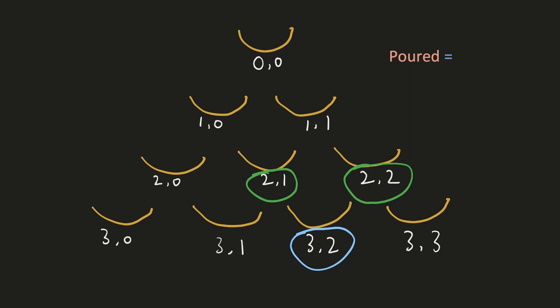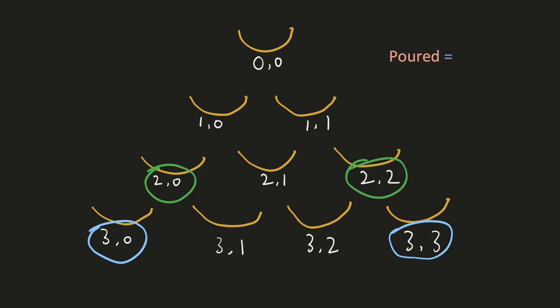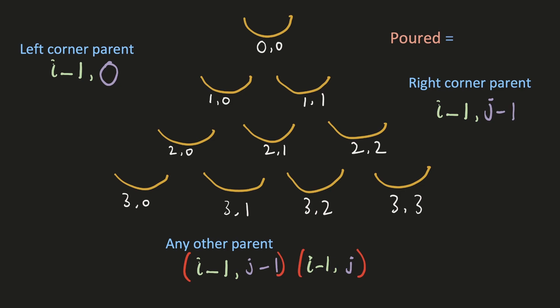Let's find a generalized position for the two parent glasses from which spillage happens. The row number is easy — it's just one above our current glass. For the column number, the left parent has a column number one less than the current glass, and the right parent has the same column number. For corner glasses, only one parent pours into them: the left corner glass receives spillage from the glass at the 0th index above, and the right corner glass's parent has a column number one less than it.